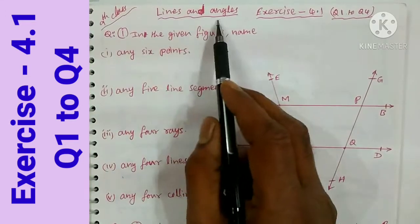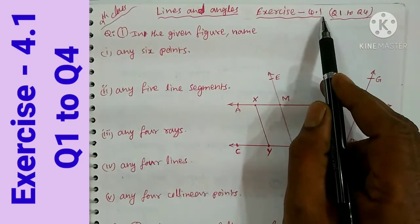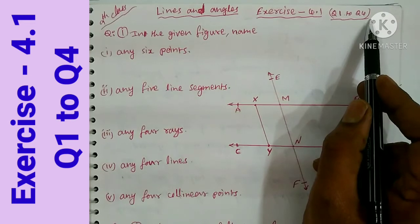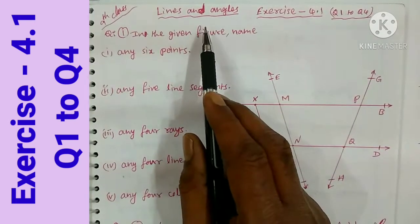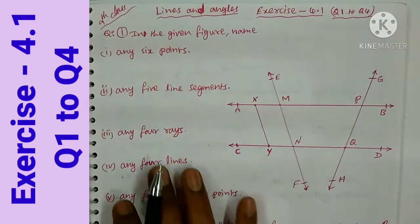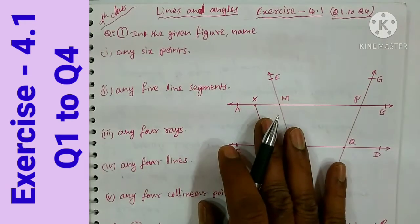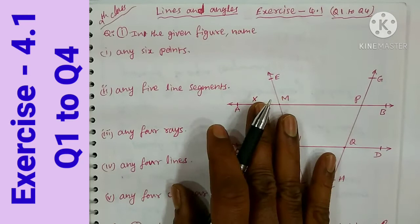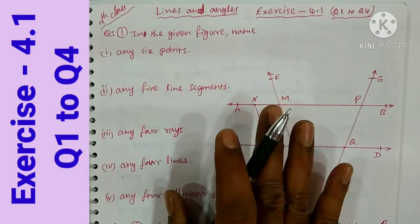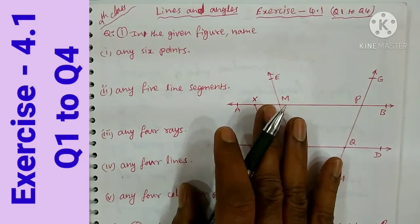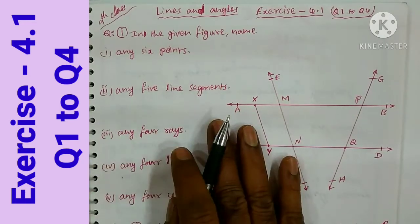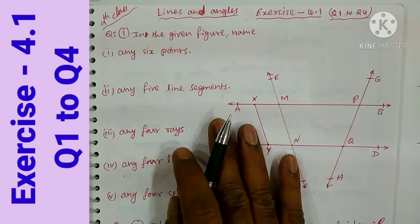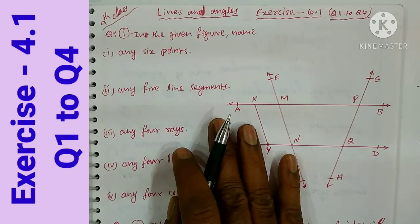Ninth class, Lines and Angles, Exercise 4.1, question number 1 to 4, four questions, complete exercise. Before doing this exercise, you must learn the geometry terminology. That is given in the first video, the previous video, in the name of introduction to geometry or geometry basics.